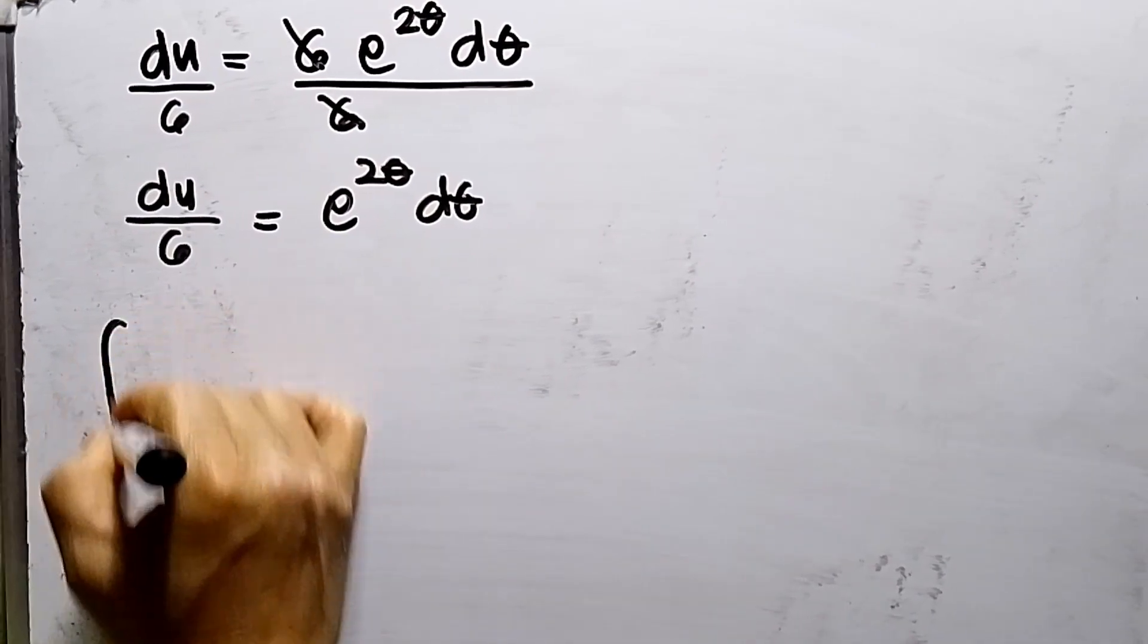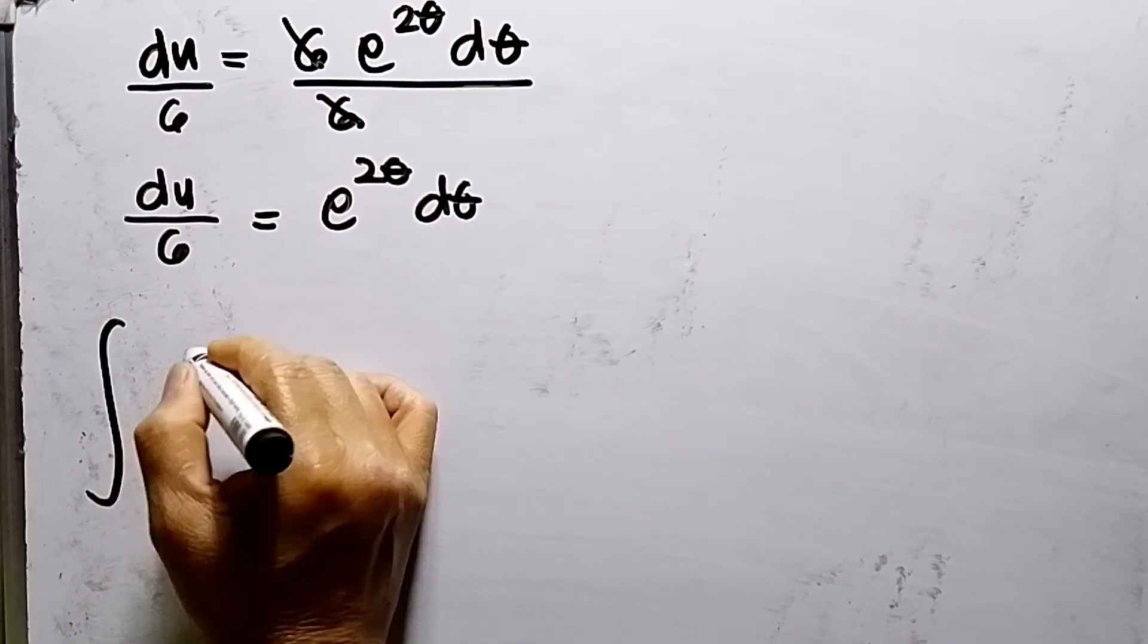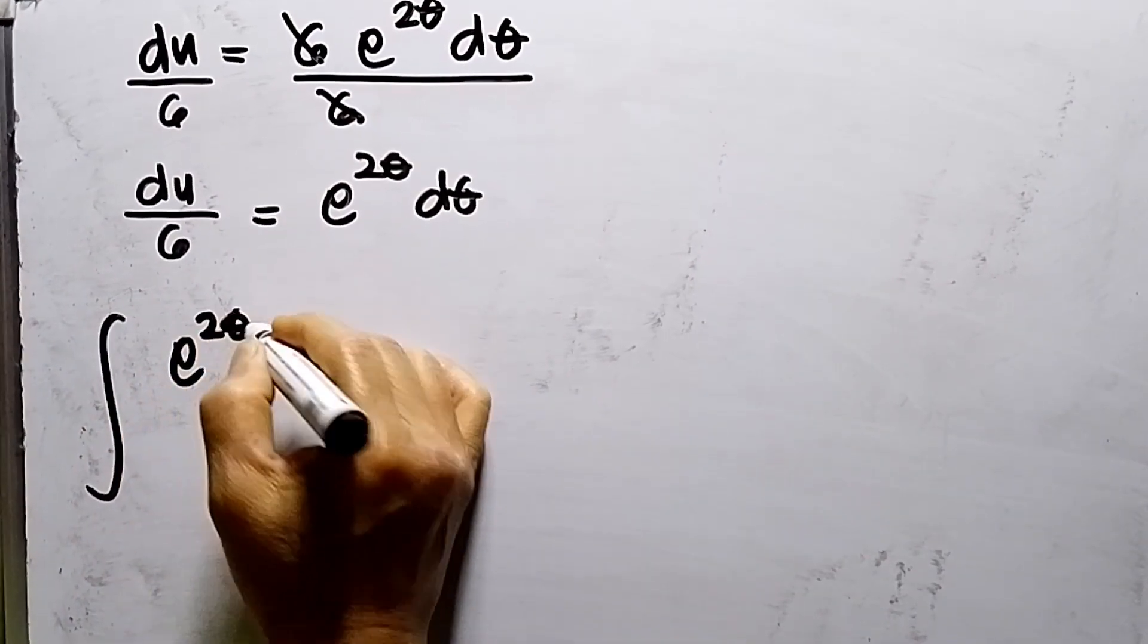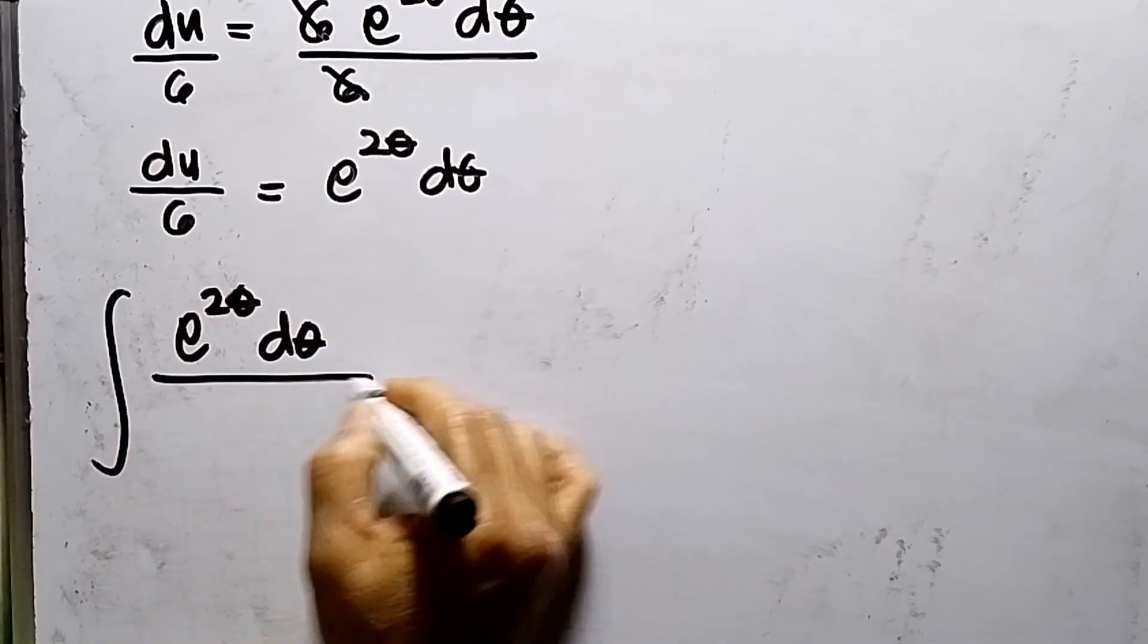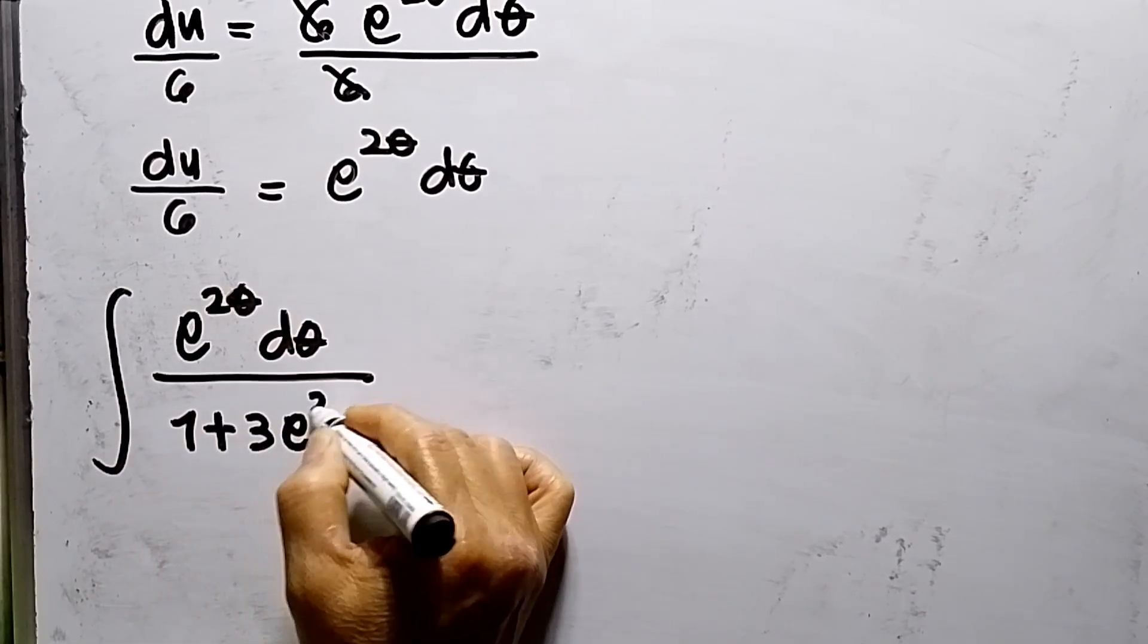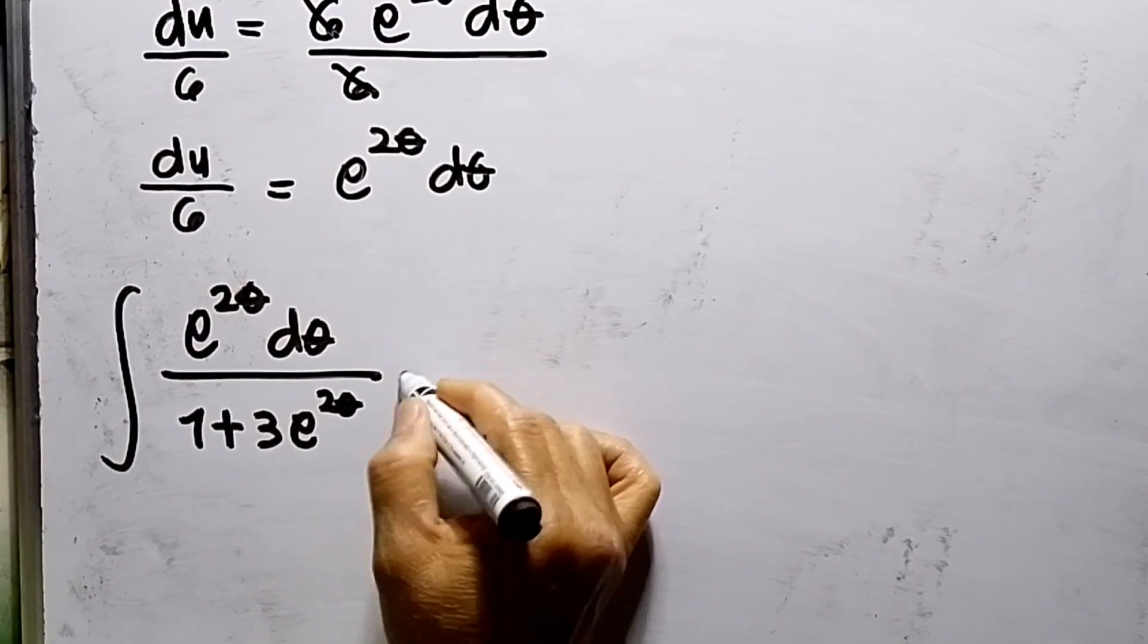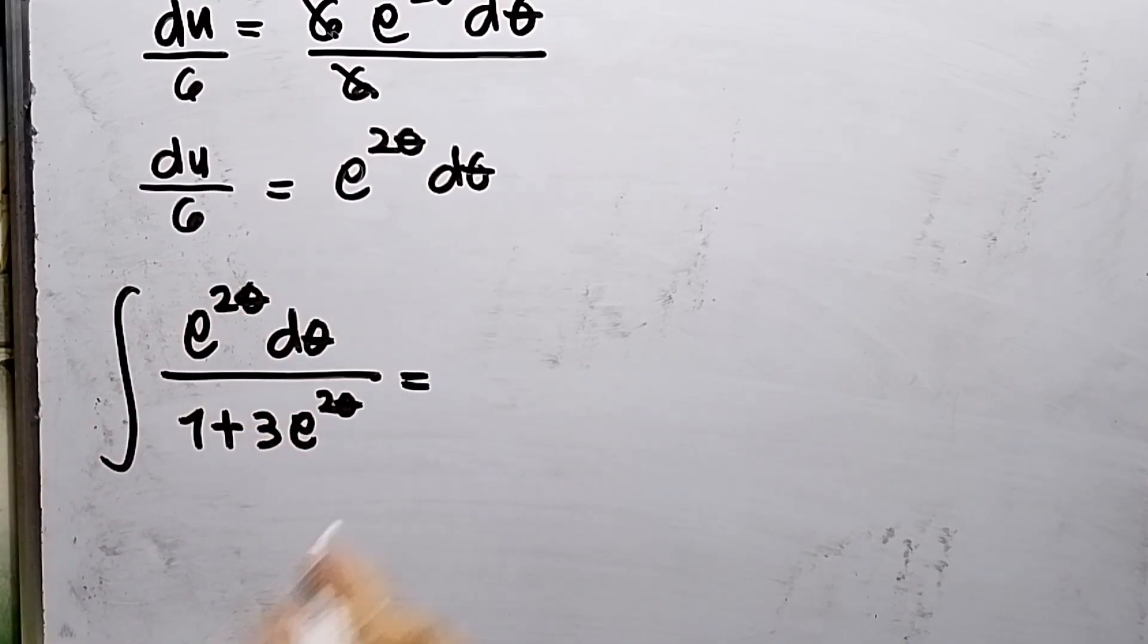So the given was e to θ dθ over 1 plus 3e to θ, so e to θ will be...